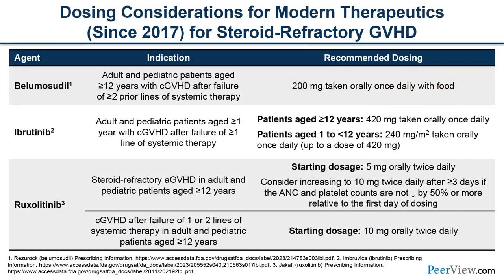Here is dosing information for the three FDA-approved agents, which will also be available in the downloadable practice aid. Belumosertib is a ROCK2 inhibitor with a recommended dose of 200 milligrams once daily, with dose adjustments for concurrent medications. Ibrutinib is FDA-approved for chronic GVHD after failure of at least one line of systemic therapy, approved in both adults and pediatric patients down to age one. The adult dose is 420 milligrams, with lower weight-based dosing for younger pediatric patients.